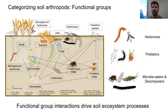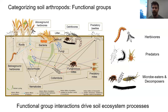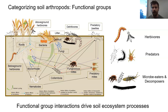Moving on to categorizing soil arthropods by different functional groups — these functional group interactions are really what's driving ecosystem processes in the soil. I've got a complicated food web here, but basically we're going to talk about three main functional groups: the herbivores, predators, and the microbeaters and decomposers. All of the critters we're going to highlight are from soil arthropod communities collected from agricultural systems here in the Pacific Northwest — these things are right outside our back door.